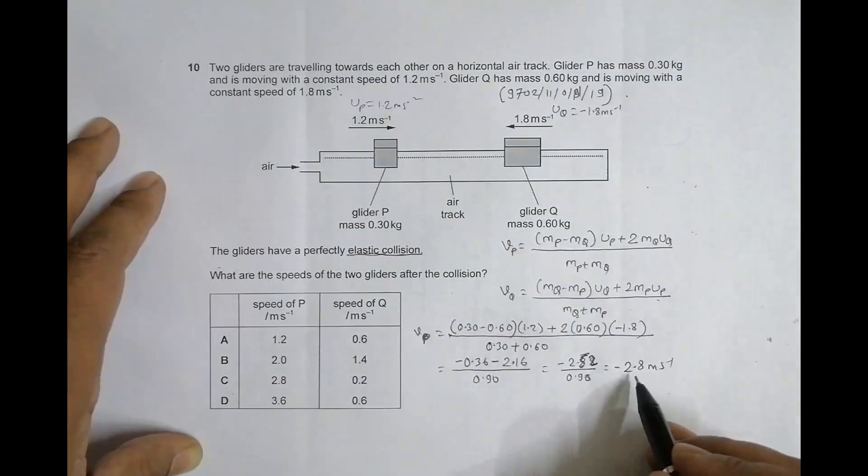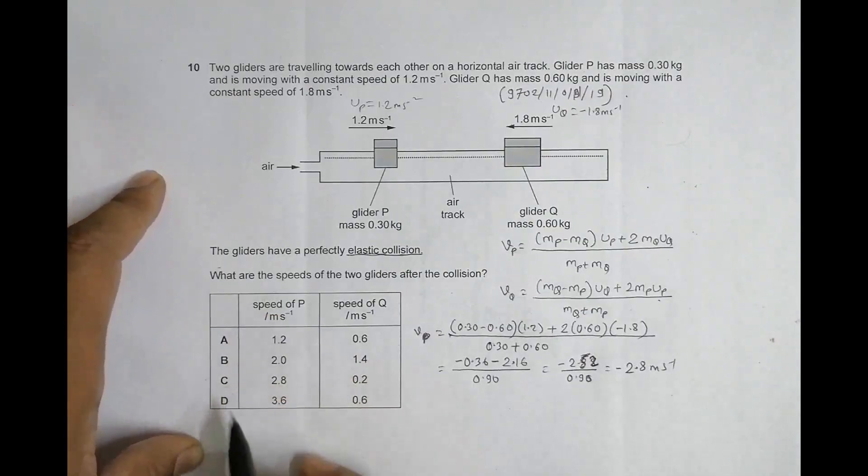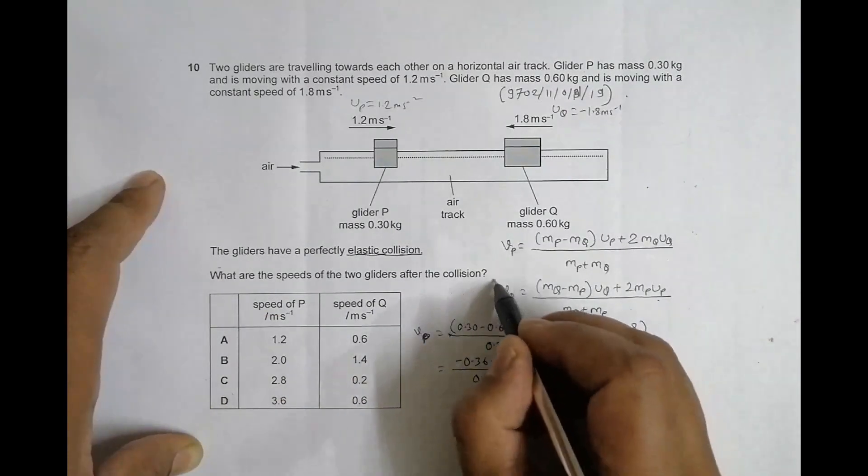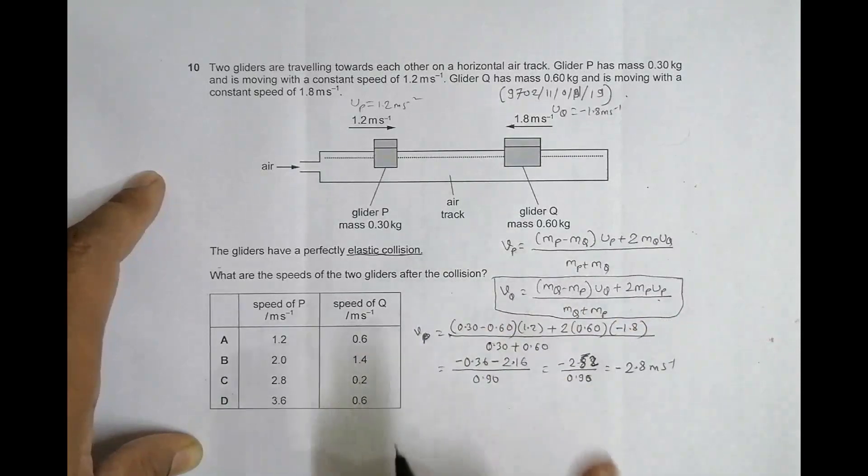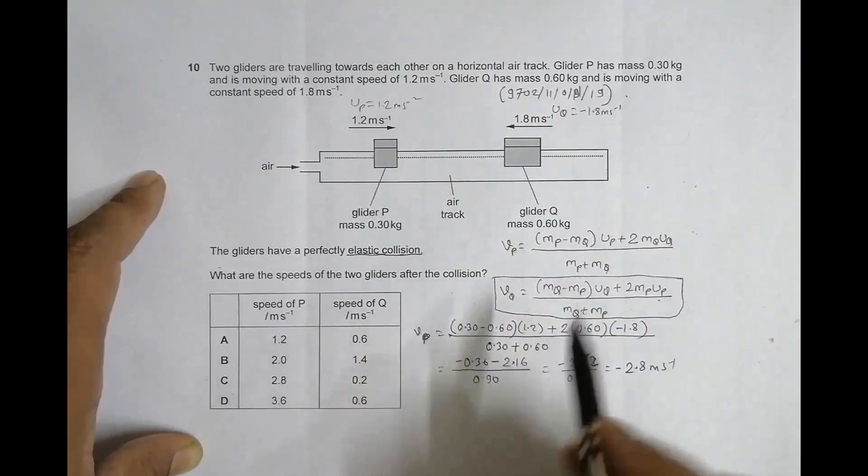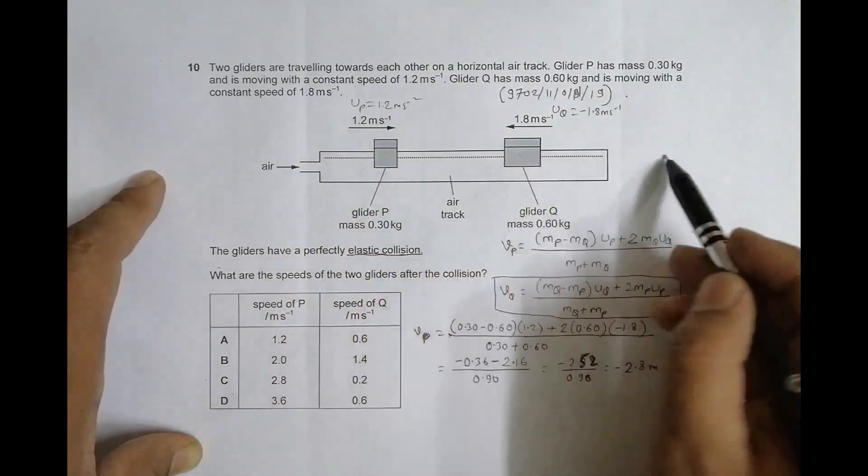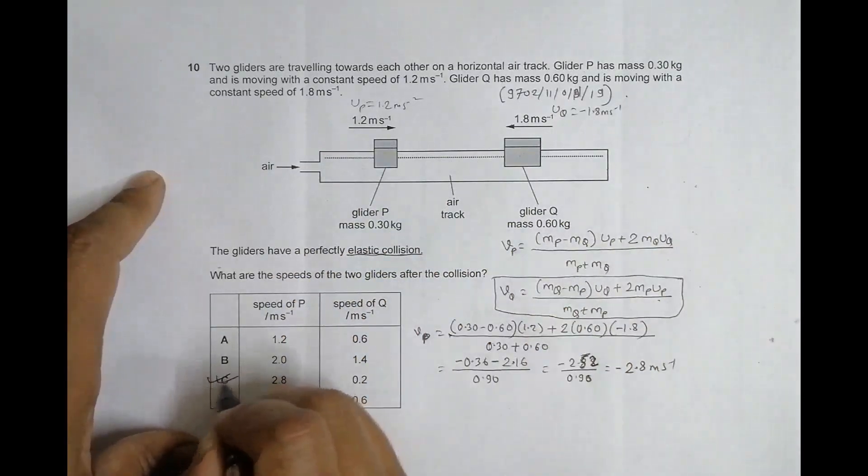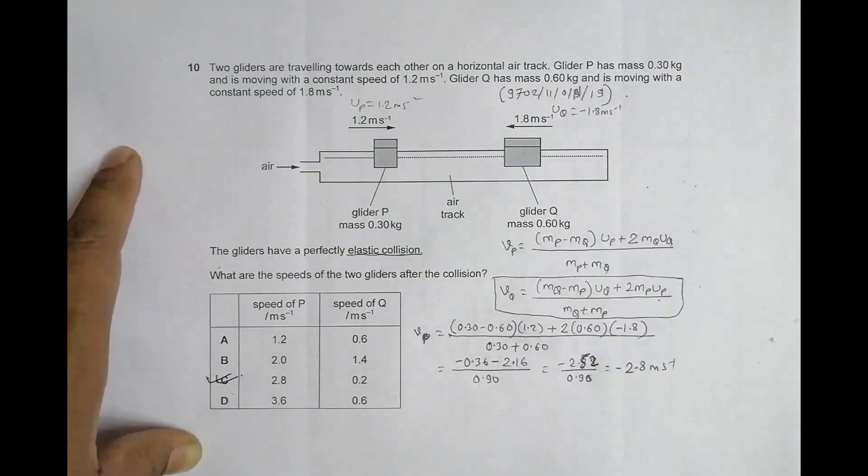So this body P will come back like this in a head-on collision, and its velocity will be 2.8 meter per second. If I go to answer choices, only choice C is correct. Now if I apply this formula for Q, you will obtain 0.2 and that's positive, so positive means the body will go in this direction. P after colliding goes this direction and Q goes this direction, so the correct choice is C.